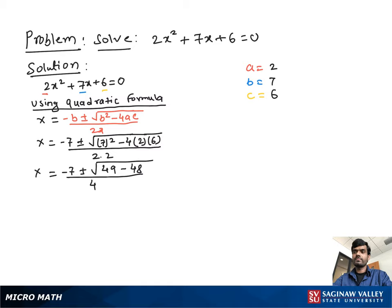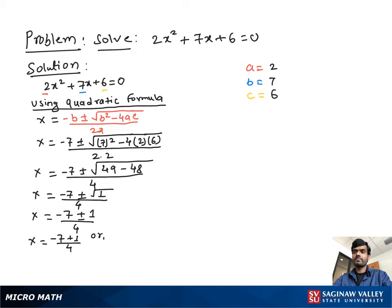Then x is equal to negative 7 plus or minus the square root of 49 minus 48, which is 1, over 4. So x is equal to negative 7 plus or minus the square root of 1, which is 1, over 4. Now we can split this into two parts: x is equal to negative 7 plus 1 over 4, or x is equal to negative 7 minus 1 over 4.